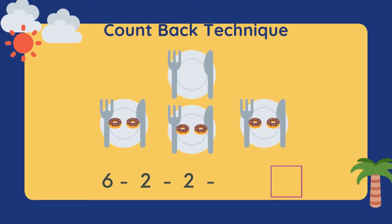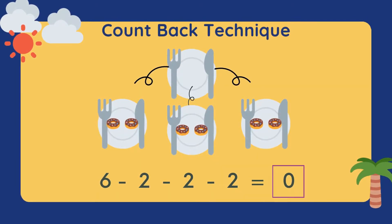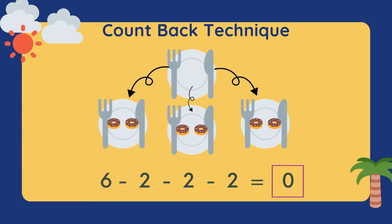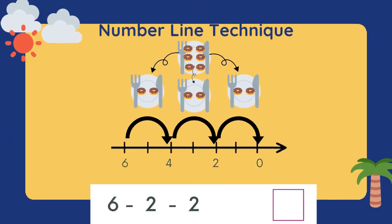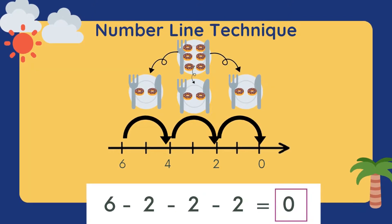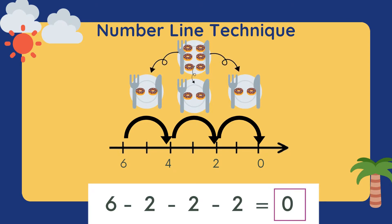Now we're going to do the count-back technique until we get the answer 0, because technically the main plate is already empty — all doughnuts are separated into 3 groups of 2s. Put 6 at your mouth, 2 at your fingers, count back to get 4. Put 4 at your mouth, 2 at your fingers, count back to get 2, continuing until you get 0. We can also draw a number line: from 6, go to 4, from 4 go to 2, from 2 go to 0.